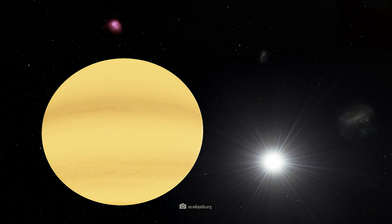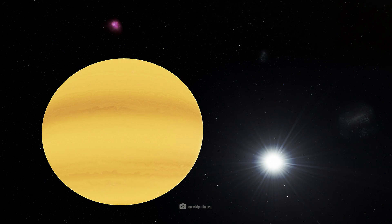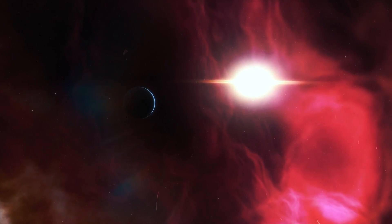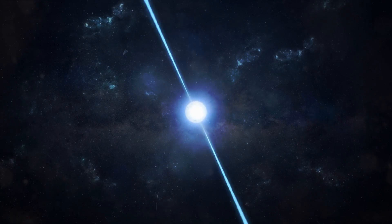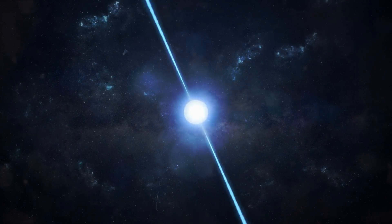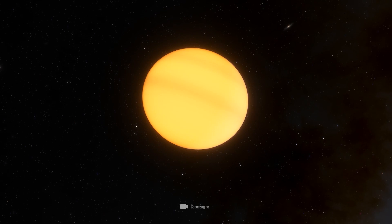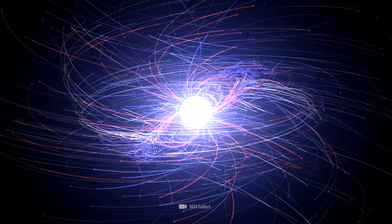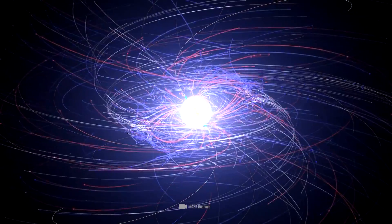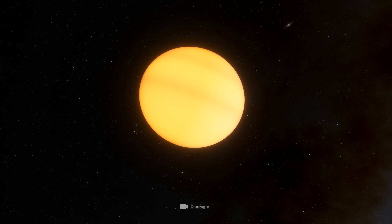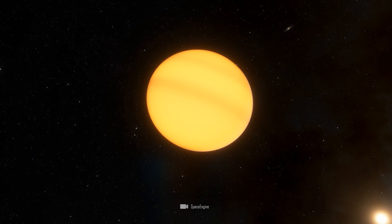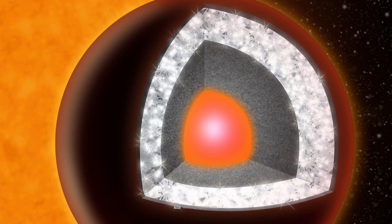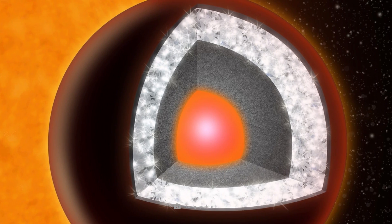PSR J1719-1438b is another planetary extreme example that shows us in a bizarre way how unusual exoplanets can be. This planet orbits a neutron star, which is also a pulsar and has extremely fast rotations. PSR J1719-1438b was probably not born as a planet, but as a star. Most of the star's mass was stripped away over time by the strong gravitational influence of its neutron star partner, leaving the core, which is rich in carbon. Due to the extremely high pressure, this core was so overloaded that it was transformed into a diamond about five times the size of Earth.